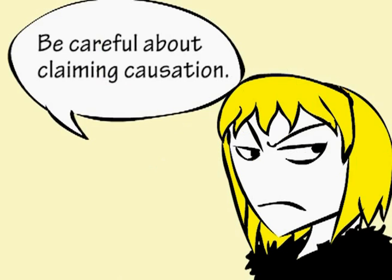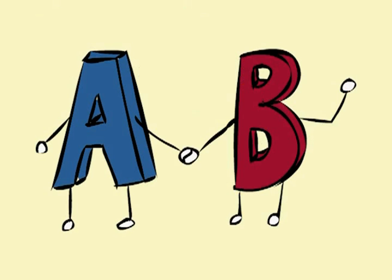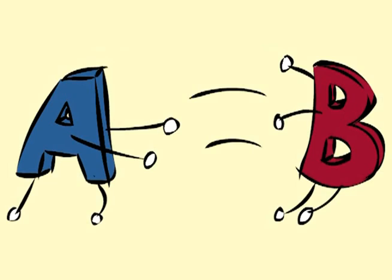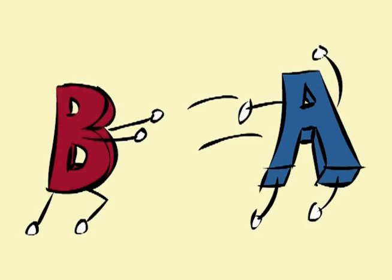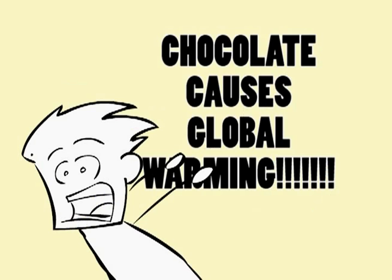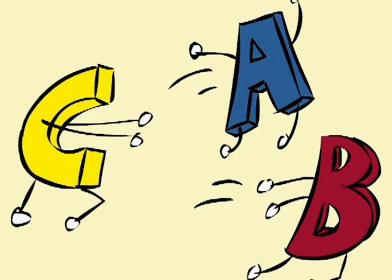There can be several possible explanations for a result where A and B are correlated. It might be that A does cause B — in this case, the extra degree of temperature causes sales to drop. Or B might cause A — in this case, it would imply that the reduced sales cause the temperature to go up, which is unlikely here. It may also be that another factor is causing both A and B, though this is also unlikely in the Chocanatti case.